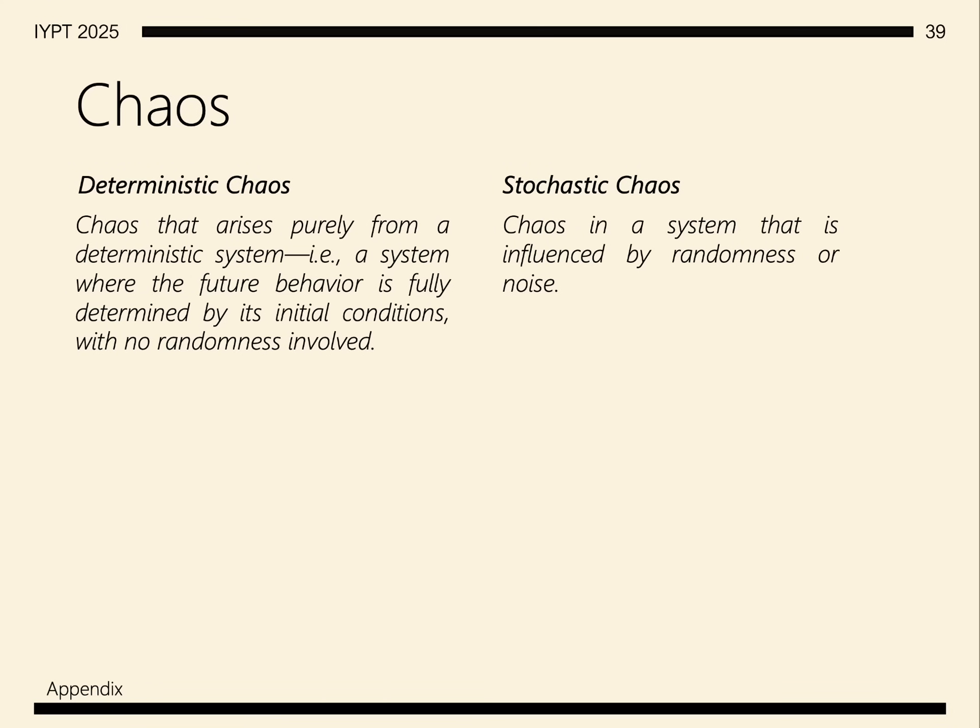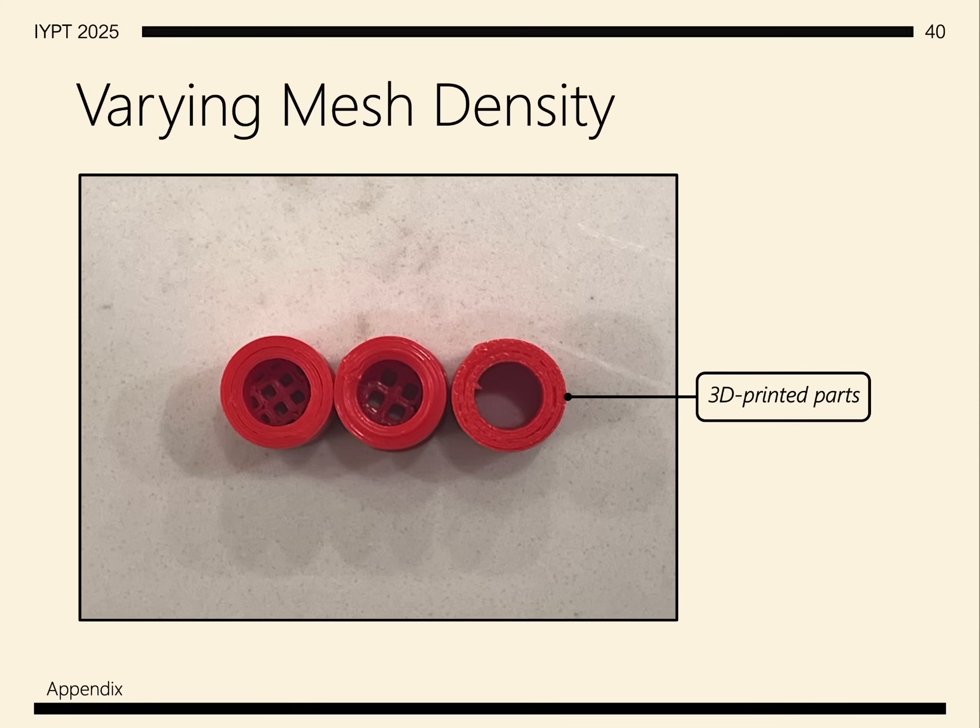It's important to understand the difference between deterministic and stochastic chaos. We observe deterministic chaos for the dripping of water. We can vary the mesh density by using 3D printed parts. You may also use other methods to have different meshes.